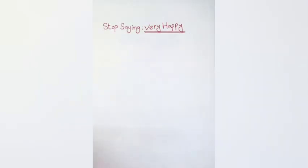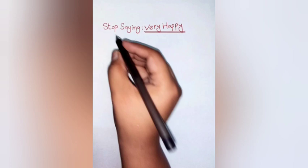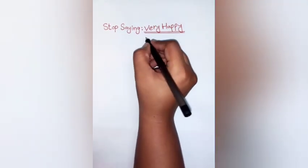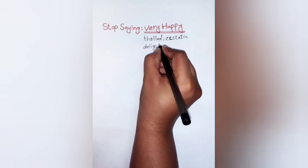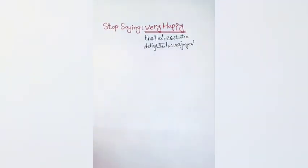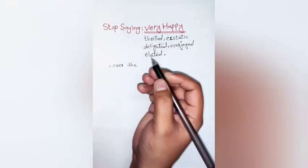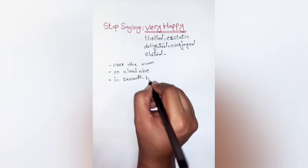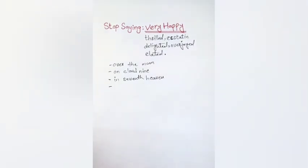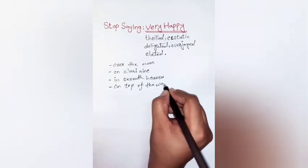So let's get started. Stop saying 'very happy.' Happy is a really common word in English, and of course there is nothing wrong with using it, but sometimes it can sound a bit dull or overused. So instead of saying 'I'm very happy,' you could say: I'm thrilled, ecstatic, delighted, overjoyed, or elated. You could also use idioms like 'over the moon,' 'on cloud nine,' 'in seventh heaven,' 'on top of the world,' or 'floating on air.'